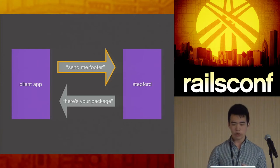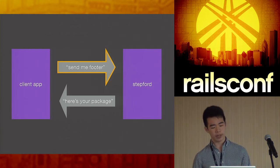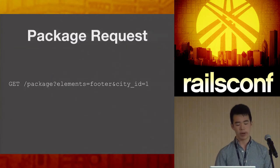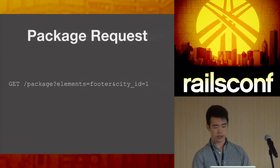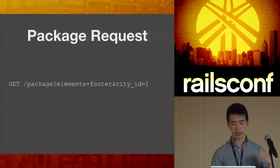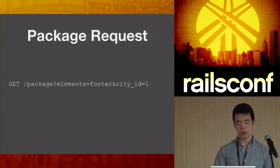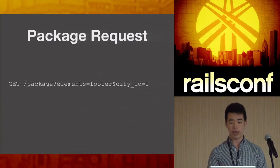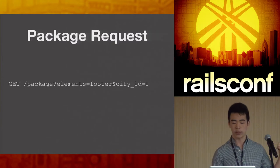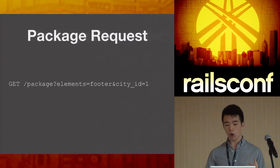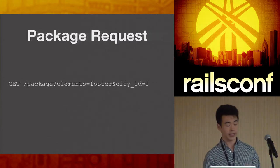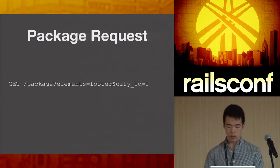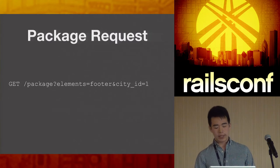What we came up with: a client app asks Steppard to send the footer; Steppard does some stuff behind the scenes and comes back with a package. Breaking that into steps — the first step, 'send me the footer,' is simply a GET request to a JSON endpoint. It's a GET request to the packages controller, specifying the elements wanted in the query string — here requesting the footer — and you can pass additional variables like city ID for semi-personalized content.